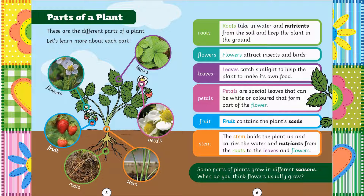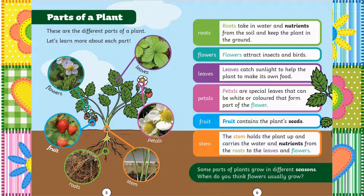Flowers attract insects and birds. Leaves catch sunlight to help the plant to make its own food. Petals are special leaves that can be white or coloured that form part of the flower. Fruit contains the plant's seeds. The stem holds the plant up and carries the water and nutrients from the roots to the leaves and flowers. Some parts of plants grow in different seasons. When do you think flowers usually grow?